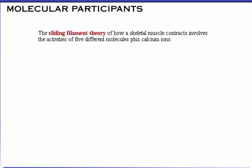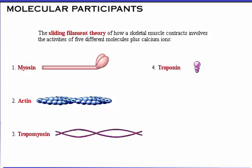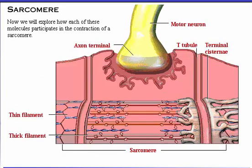The sliding filament theory of how a skeletal muscle contracts involves the activities of five different molecules plus calcium ions. The five molecules include myosin, actin, tropomyosin, troponin, and ATP. In addition to these five molecules, calcium ions are also involved in the process of muscle contraction. Now we will explore how each of these molecules participates in the contraction of a sarcomere.